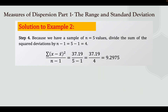In step 4, because we have a sample of n = 5 values, we divide the sum of the squared deviations by n minus 1, which is 5 minus 1 = 4. So we have the sum of the squared deviations,